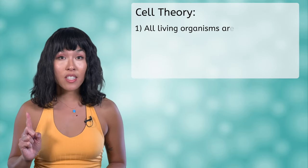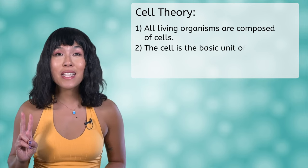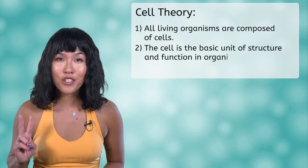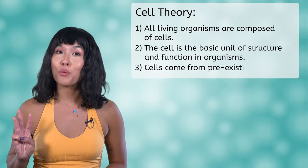Obviously, lots of scientists contributed to what we now know about cells, but you've seen just a few of the important contributions. These make up the classical cell theory, which includes three tenets, or main ideas. One, all living organisms are composed of cells. Two, the cell is the basic unit of structure and function in organisms. And three, cells come from pre-existing cells.